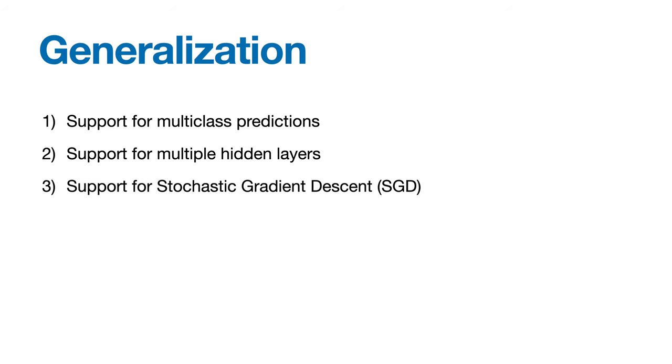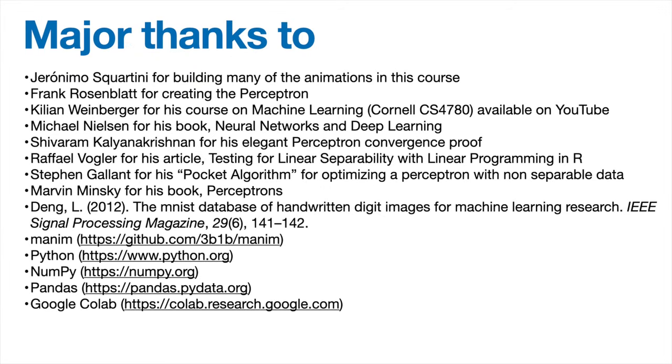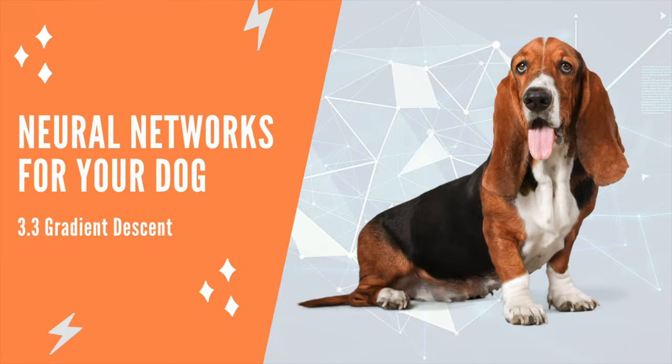Next, let's focus on generalizing our model. Some nice improvements would be support for multi-class predictions, support for multiple hidden layers, and support for stochastic gradient descent. I'll explain what that is and why it'd be nice to have later, but in the next section, we're going to focus on support for multi-class predictions.